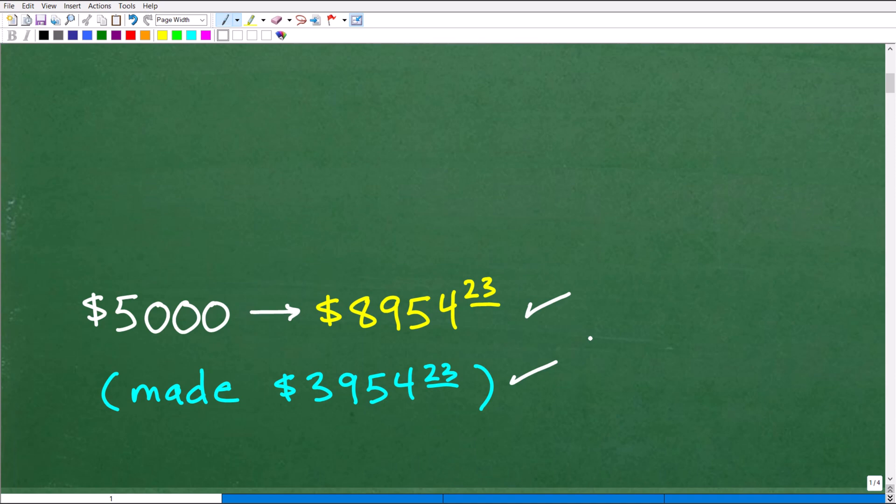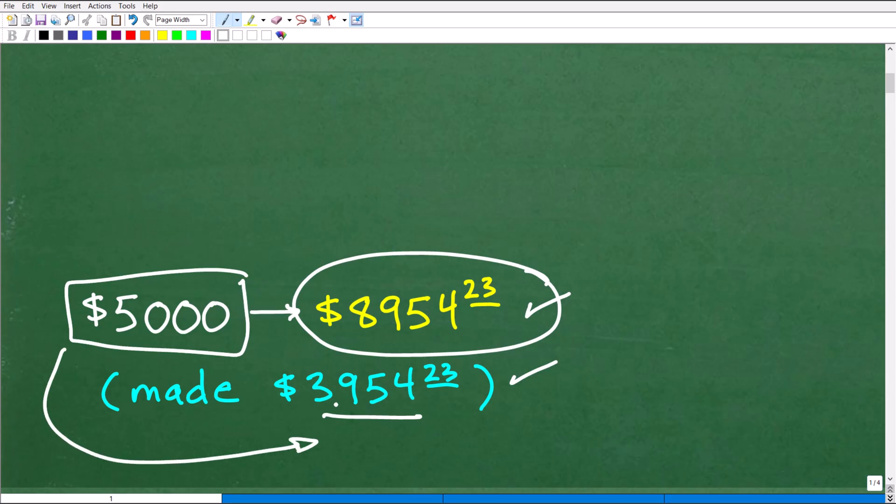So that means you've made $3,954.23. So you got to be careful on your answers. If you're saying, how much did you make? Well, you made this amount. This is your total account balance. But remember, you started with your own money of $5,000.